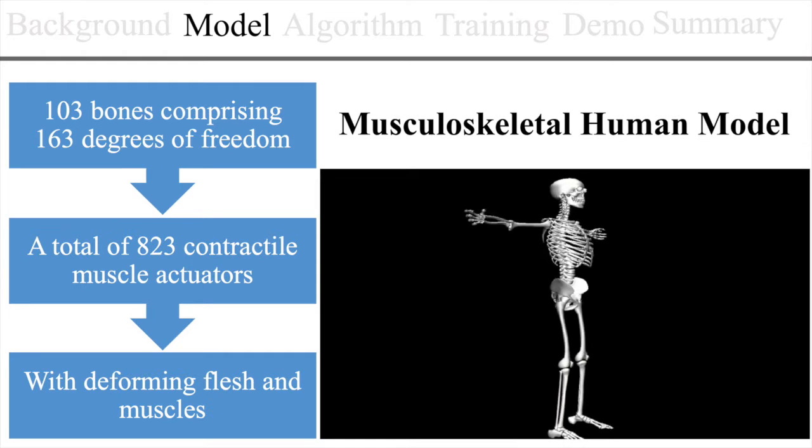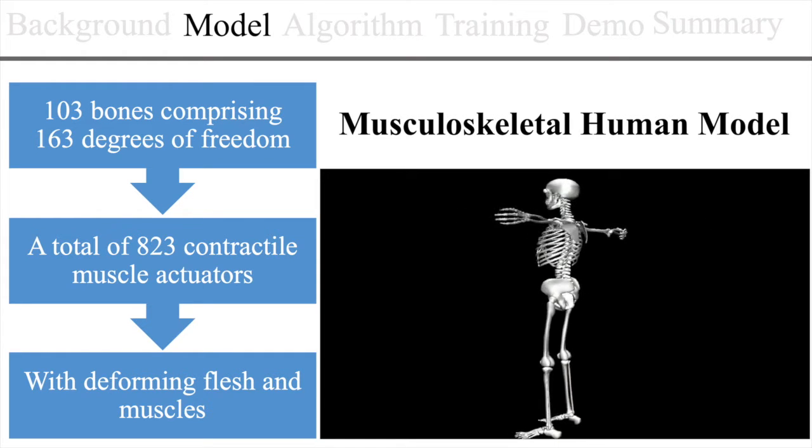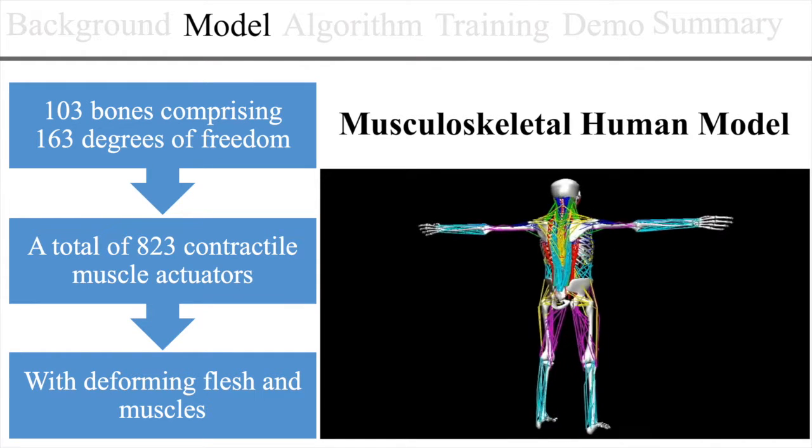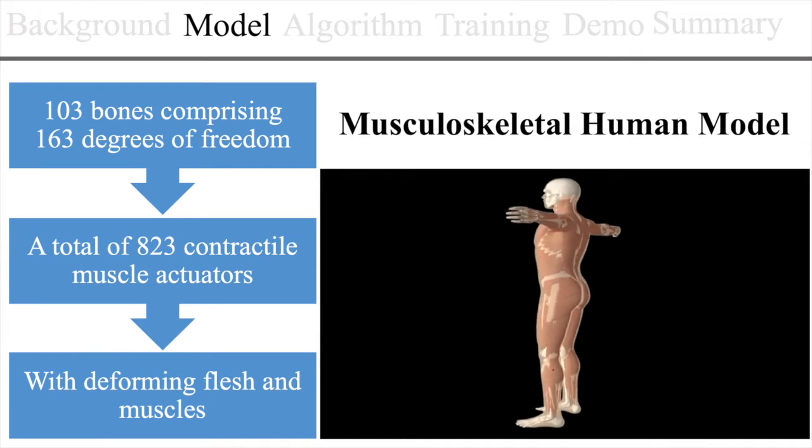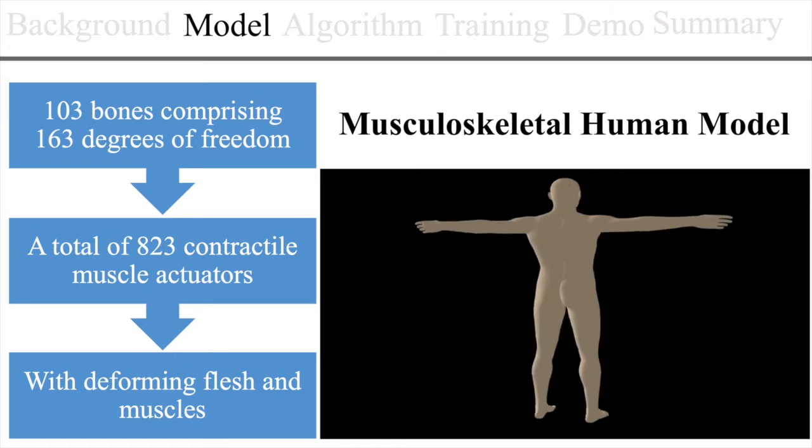Our musculoskeletal model has 100 bones comprising 160 degrees of freedom and 800 muscles. The virtual human is embedded with deforming flesh and muscle model.